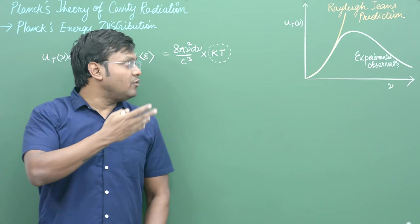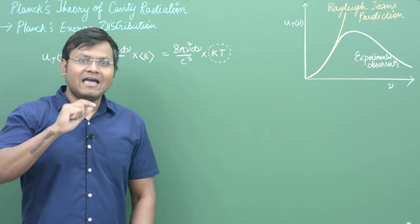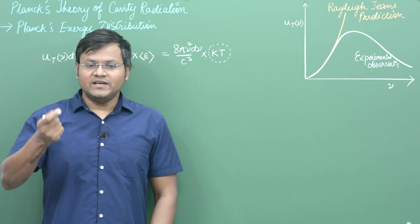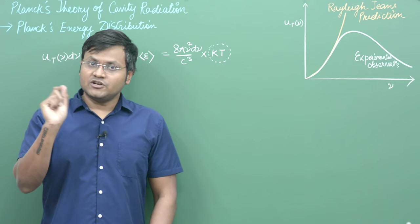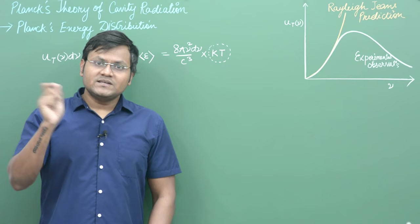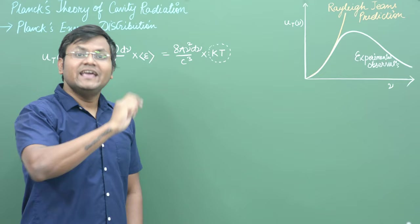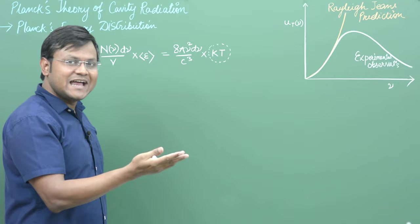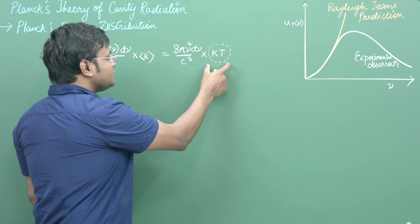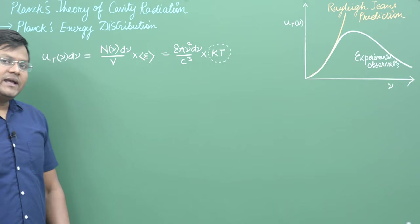Rayleigh-Jeans obtained the expression (8π ν² dν / c³) × kT. The first term represents the total number of standing wave patterns in a given frequency range within a cavity, obtained geometrically. The second term, kT, comes from classical kinetic theory — specifically the law of equipartition of energy — because the standing waves arise from harmonic oscillators (charged particles/electrons in the cavity walls), and for harmonic oscillators the average energy is kT.